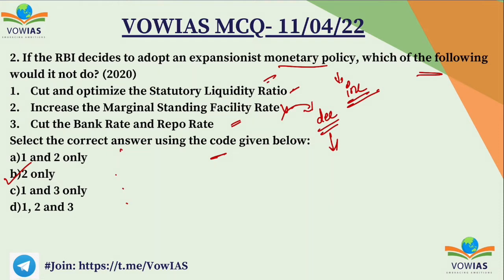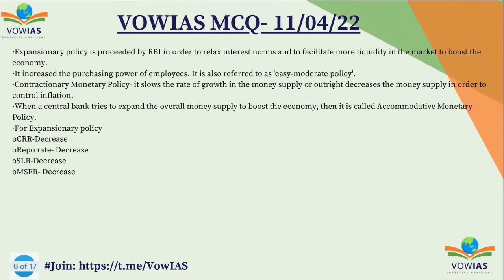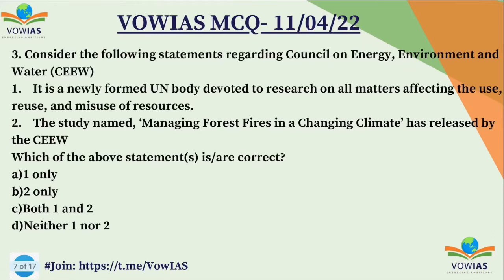Cutting down the SLR will increase the money supply with banks. Cutting the bank rate and repo rate will ensure more lending takes place due to low interest rates, which increases money supply in the economy and leads to expansionary monetary policy. So B — 2 only — is the correct answer. This is a 2020 economics question. Now let's look at the third question.